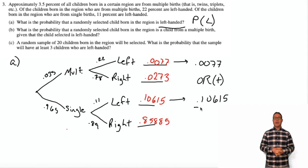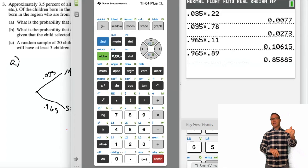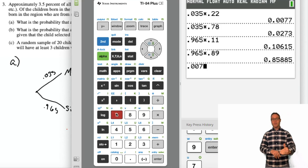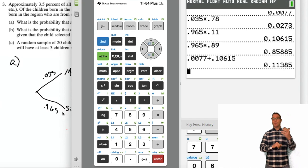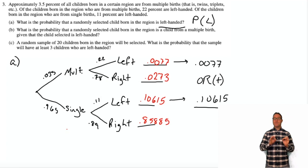All right, so what am I doing here? The question was, what's the probability that you're left-handed? So that means you're either left-handed and from a multiple birth, 0.0077, or, which means add, you're left-handed from a single birth. So I'm going to add those two probabilities that involve a left-hander, and I get 0.11385. That's my answer for Part A.